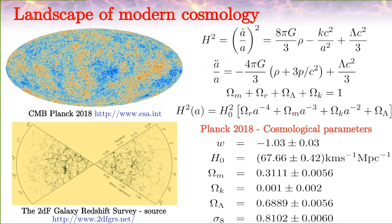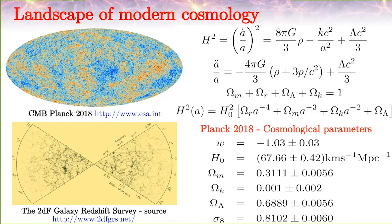Let's put in context the cosmological stuff. The current standard cosmological model is based on at least five pillars — two theoretical and three observational. From the theoretical part we have general relativity as a theory of gravity and also the cosmological principle. From the observational point of view we have the cosmic microwave background (CMB), structure formation, and big bang nucleosynthesis.